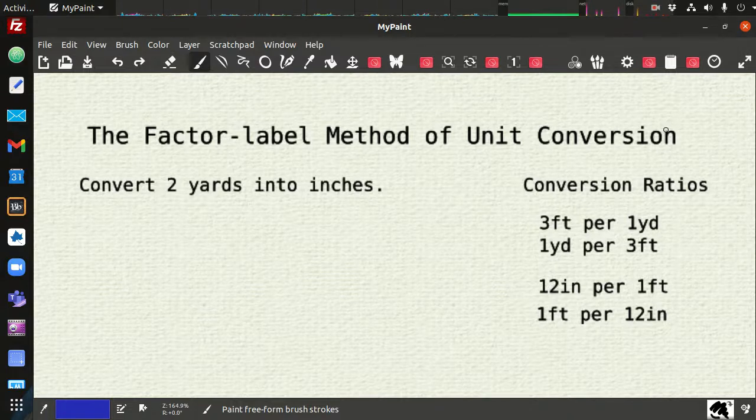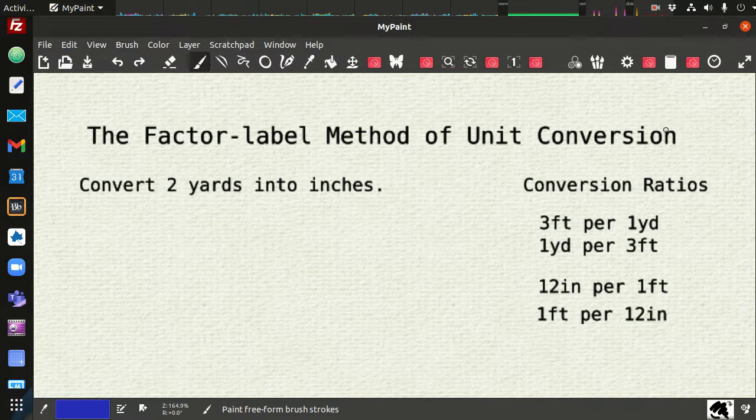Okay, in this video we're going to discuss the factor label method of unit conversion. So the idea here is we have some quantity of something. There's some numeric value, so in this case it's 2,